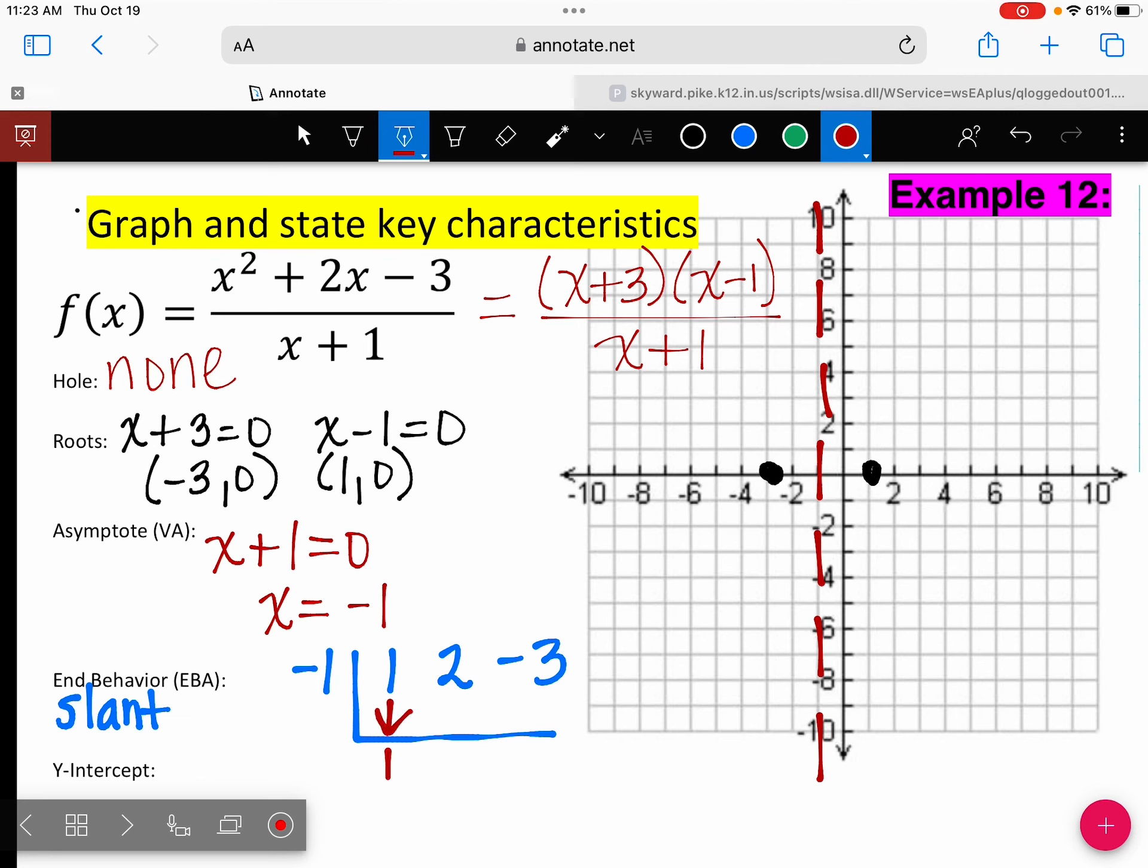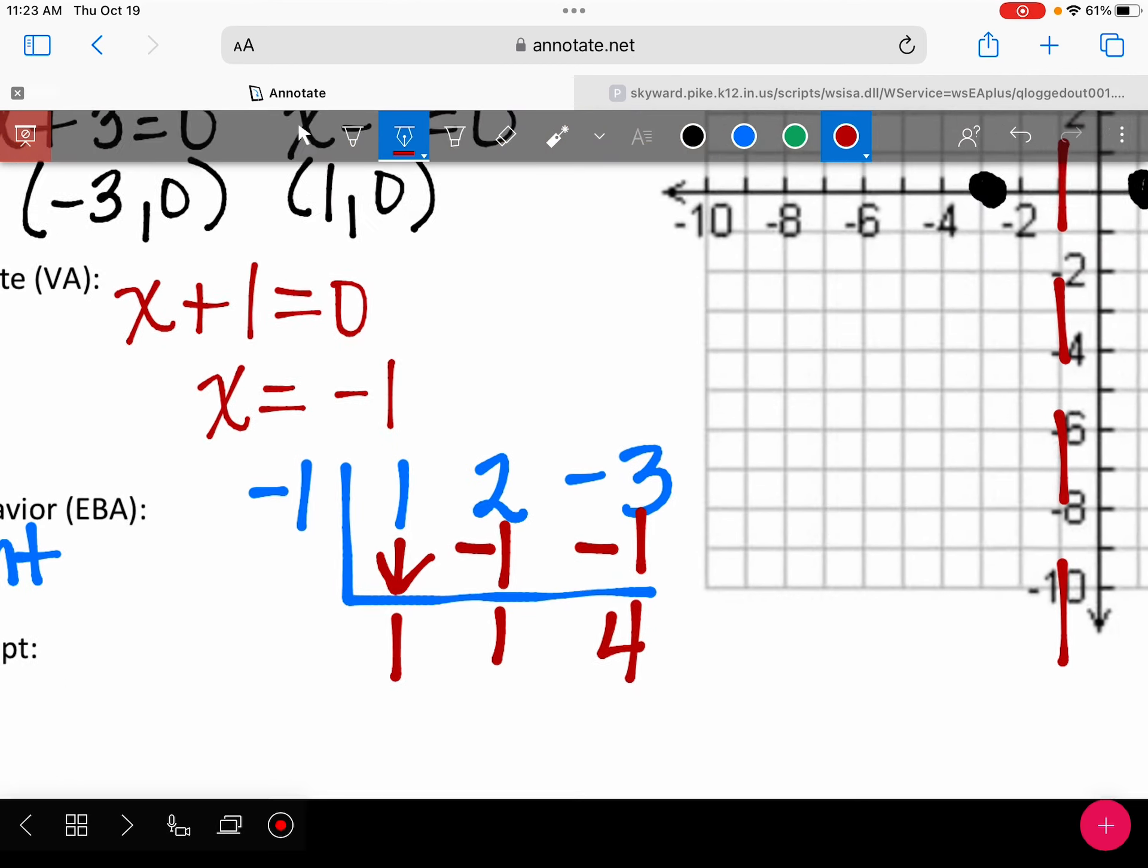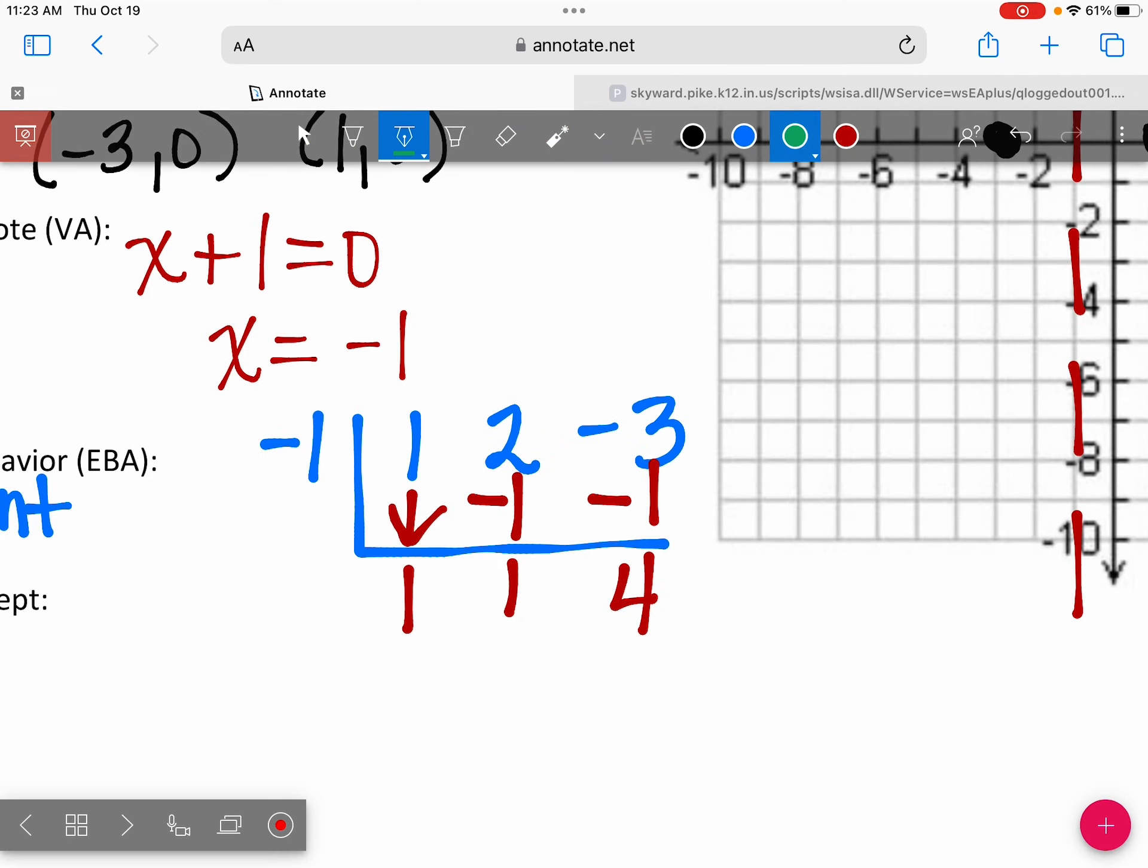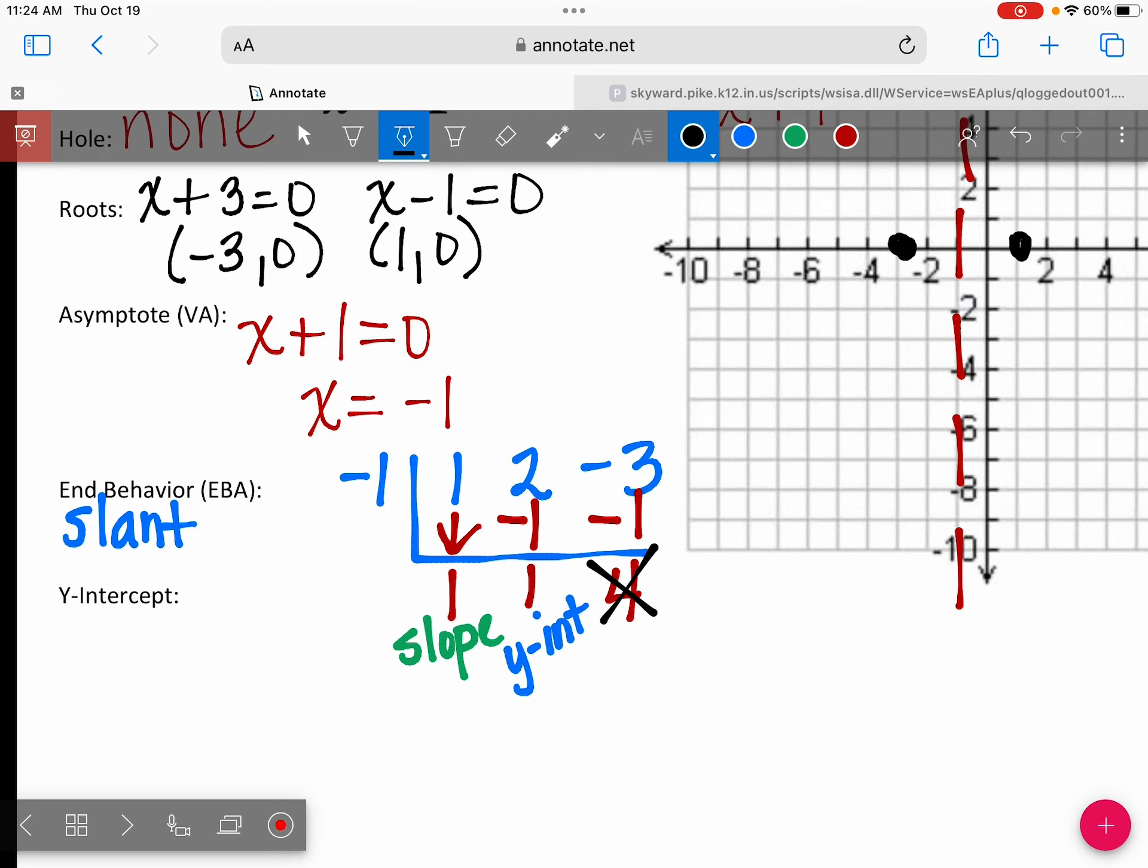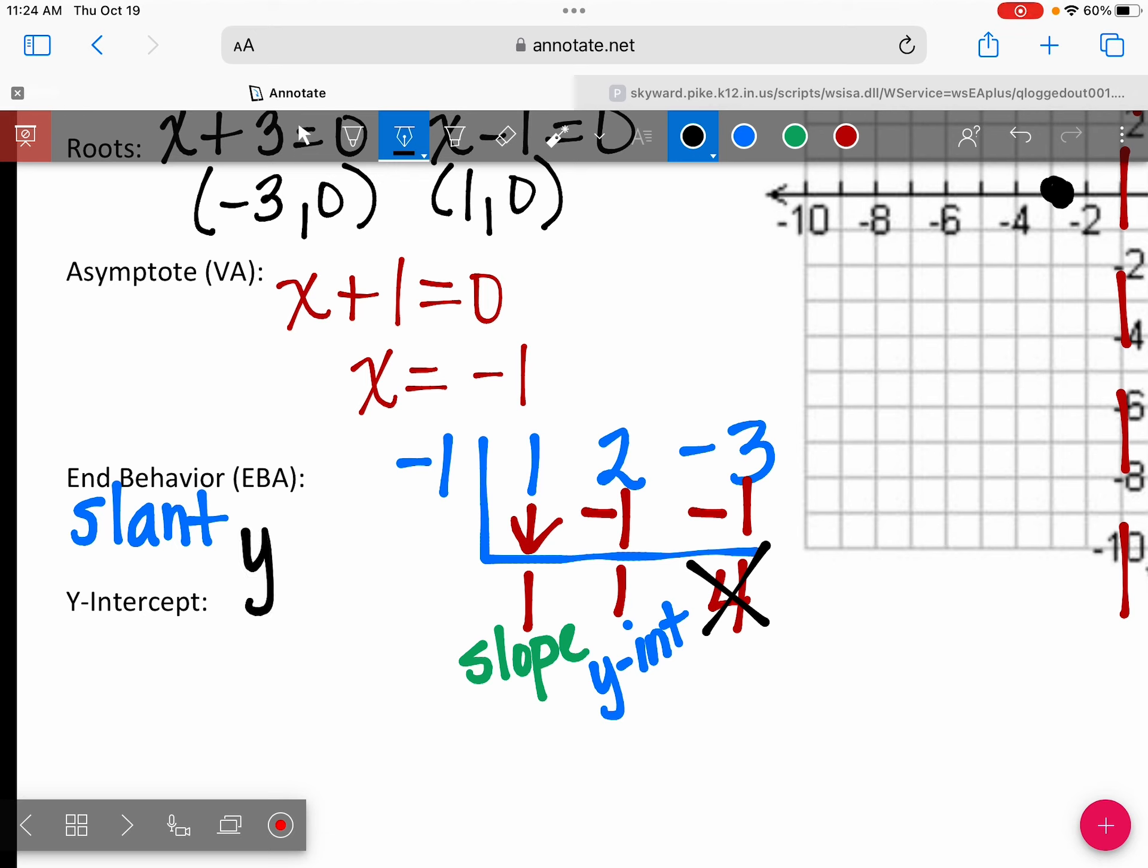So I'm going to bring down the first number, which is a 1. 1 times negative 1 is negative 1. Add, you get 1. 1 times negative 1 is negative 1. Add, you get 4. So we have these three numbers. This first number is your slope. The second number is your y-intercept. And then this third number, we're going to just cancel out. You don't use that third number. So when you write your equation for your slant, it's y equals 1x plus 1.